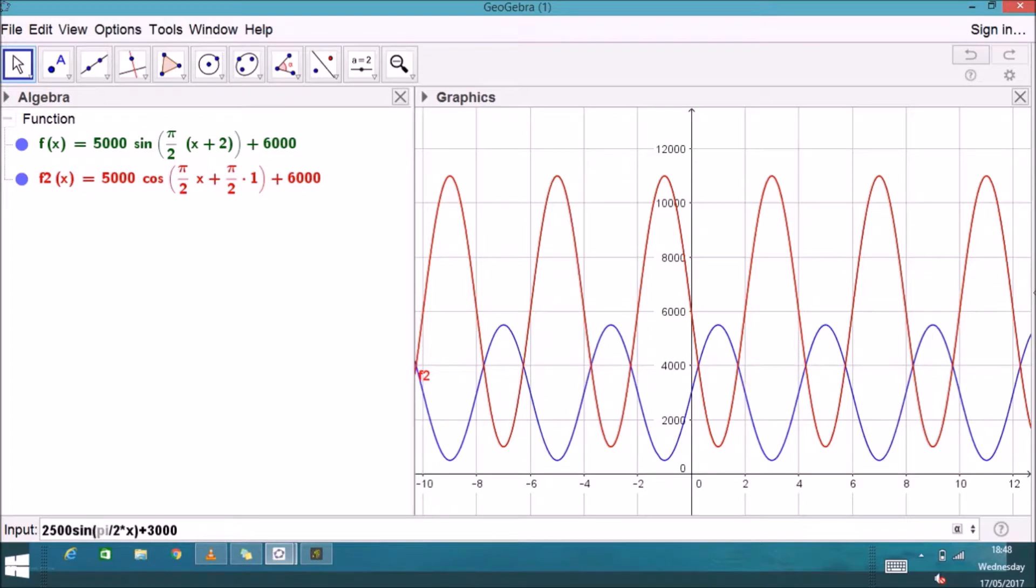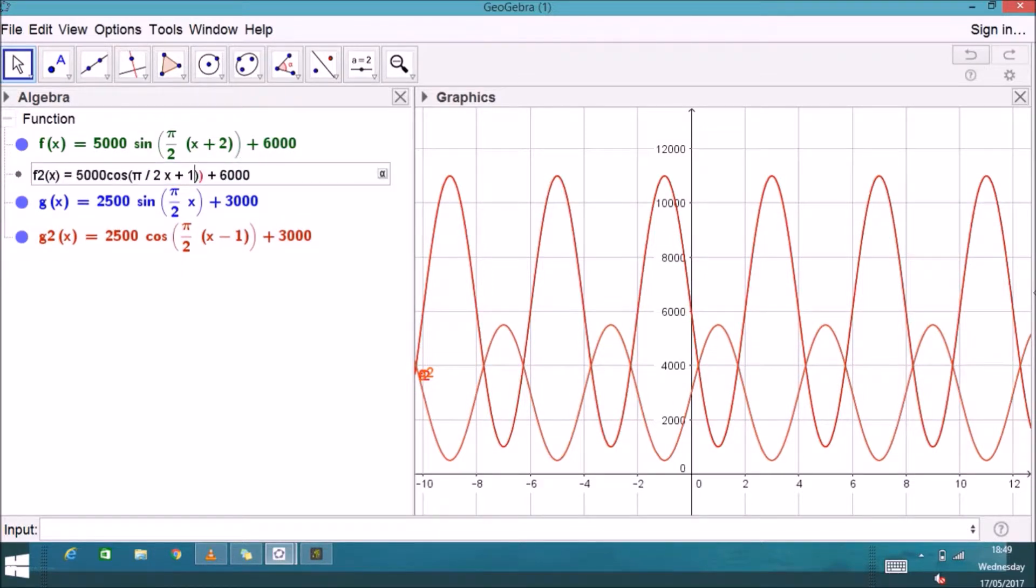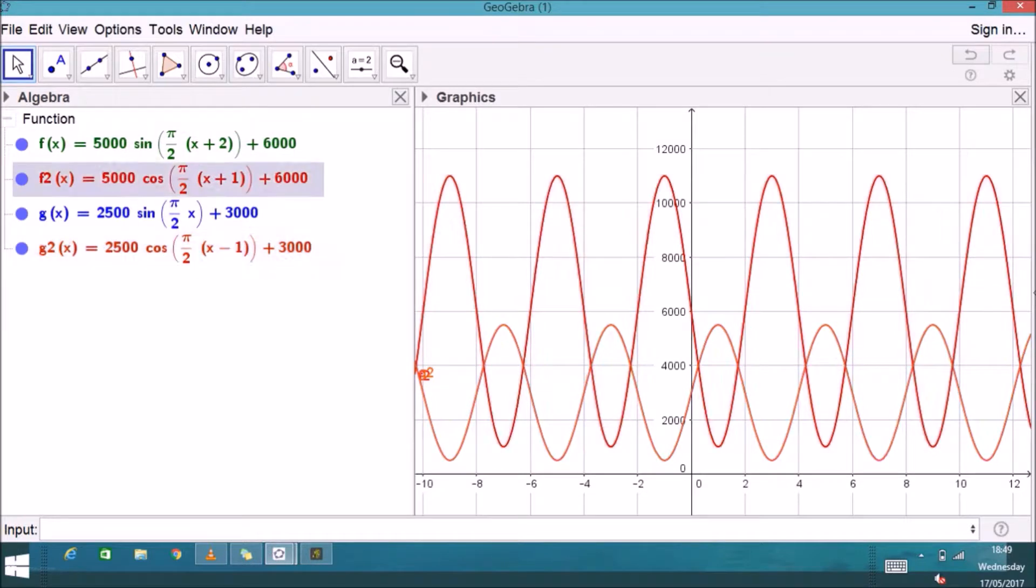I'll illustrate this again with the other function. So this one originally has no horizontal shift so it'll be easier to see the horizontal shift in action here. We make it minus because we're trying to shift it backwards, and just like with a parabola putting a minus inside the brackets shifts it to the right.